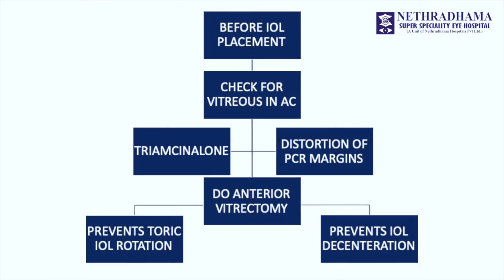If you are placing an IOL in the bag, see that you have cleared the bag and the AC completely of vitreous, otherwise the lens will not centre well and the axis of the lens may shift — especially with a toric IOL. You can look at the margins of the PCR, which gives you an indirect clue as to whether there is vitreous prolapse. If visualisation is poor, you can use triamcinolone to stain the vitreous, see the strands, do a thorough vitrectomy, and ensure there is no vitreous in the capsular bag before implanting the lens. Once the lens is implanted, again look at the margins of the PCR and see that they are not distorted — this gives you a clue that there is no vitreous in the capsular bag. If vitreous comes into the capsular bag, it can decenter the lens or misalign the toric IOL.